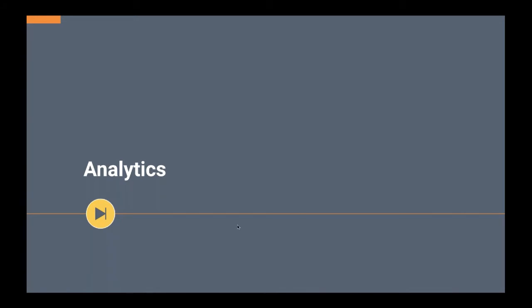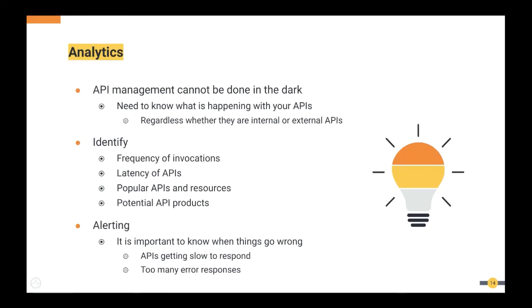Another key point to consider is analytics, because you can't do API management in the dark. You can't expose your APIs and not know what's happening. Especially for external users, you need to know who is invoking the APIs, from which regions requests are coming, which user agents they are using, and how frequently they invoke your APIs. For internal purposes, you may be interested in latency and traffic patterns so you can plan to scale your backend accordingly.